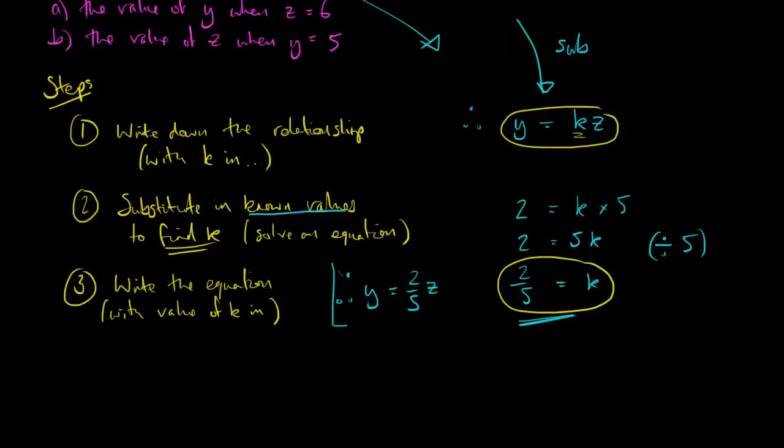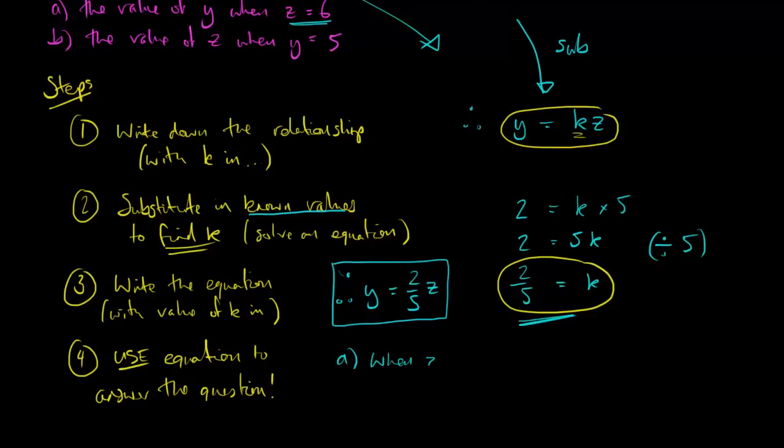Once I've done this, I can work out anything that the question is going to ask me. So, I do that by just using this equation and substituting in values that I know to find values that I need to know. So, step four is to use this equation to answer whatever it is that the question is asking. So, for part a, it's asking for the value of y when z equals 6. So, let's do that. When z is equal to 6, that means my equation tells me y is equal to 2 fifths times z, which in this case is 6. So, y is equal to 2 fifths times 6. And then just work that out however you choose. So, I'd write the 6 as 6 over 1 and multiply my two fractions together. 2 times 6 is 12, 5 times 1 is 5. And you could leave it like that, write it as a mixed number. I'm going to write it as a decimal. But it's the method that's important right now, not exactly how you write your answer.